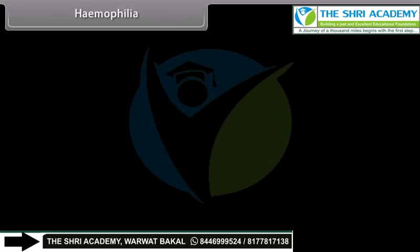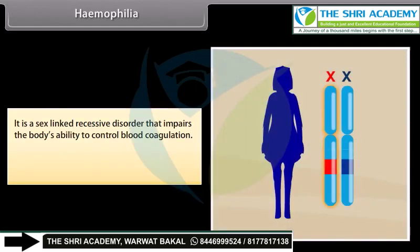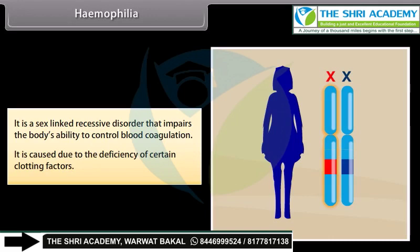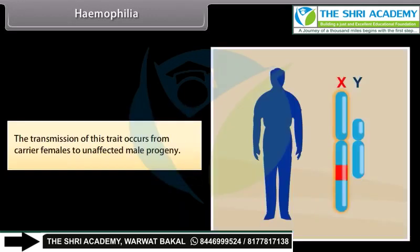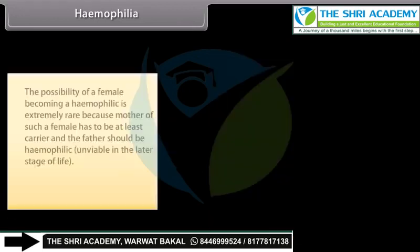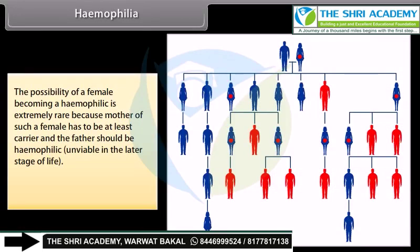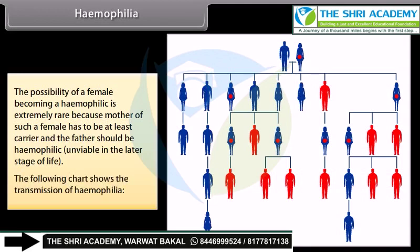Haemophilia: It is a sex-linked recessive disorder that impairs the body's ability to control blood coagulation, caused due to the deficiency of certain clotting factors. The transmission of this trait occurs from carrier females to unaffected male progeny. The possibility of a female becoming haemophilic is extremely rare because the mother has to be at least a carrier and the father should be haemophilic.